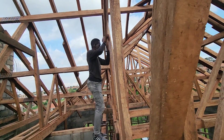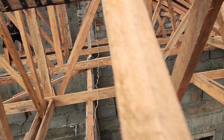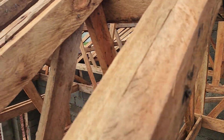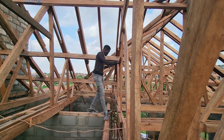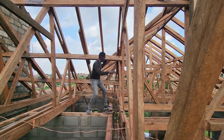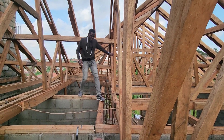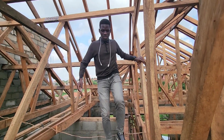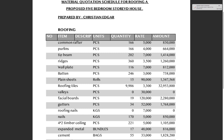Here are the materials used to roof this five-bedroom mansion with a pitched roof. Common rafters — these make the pitch of the roof, running from the tie beam while making the pitch. We bought 166 pieces at 5,000 shillings each, costing us 830,000 shillings. Purlins — these lie on top of the common rafters. We bought 166 pieces at 4,000 shillings each, costing us 664,000 shillings.